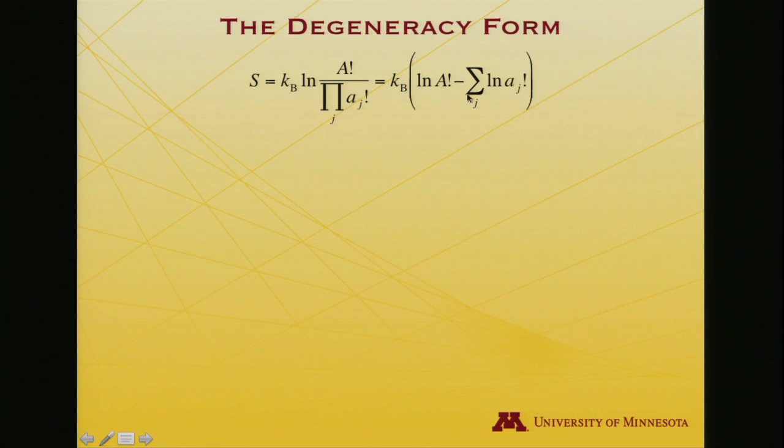But the denominator is itself a product, and the log of a product is a sum of logarithms. So when I subtract, I won't subtract log of the product, I'll subtract sum of the logs. And what are those logs? The logs of each of the individual little a_j factorial terms.